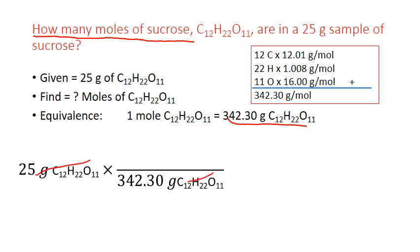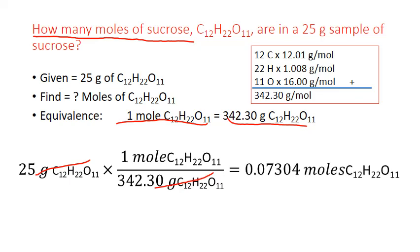Grams will cancel out. We want to get moles, so the other half of the equivalent statement goes on top, one mole. We multiply through on top, divide by the number on bottom. So 25 times 1 divided by 342.3 gives us 0.07304 moles of sucrose.